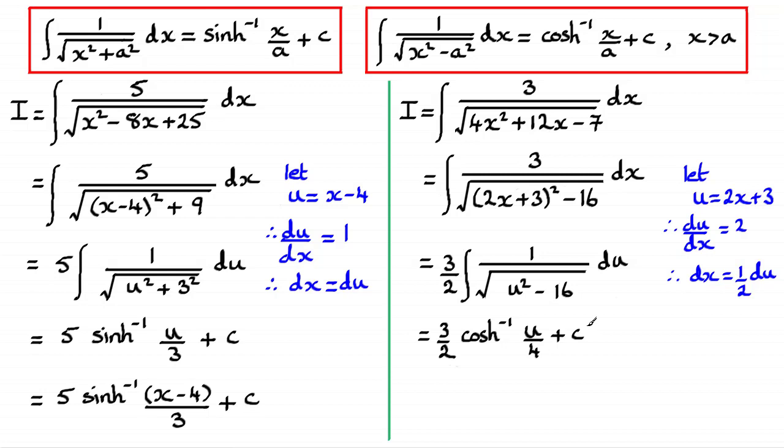Remember, a squared was 16, so a would be 4 this time. I haven't written that, obviously, as 4 squared. I could have done, but just left it as minus 16 there. And now all I need to do is just substitute back for that u as 2x plus 3. And if you do that, you're going to get this result: 3 over 2 inverse cosh of all of 2x plus 3 over 4, plus the constant of integration c.